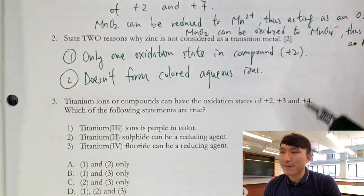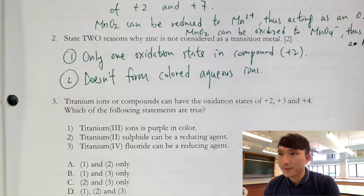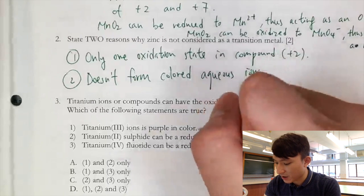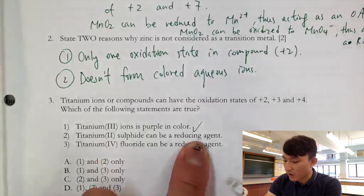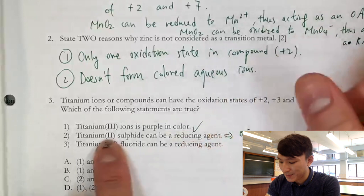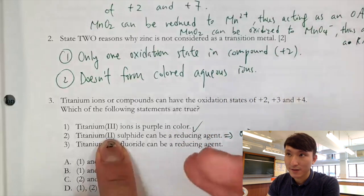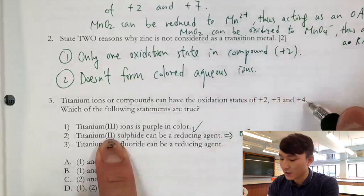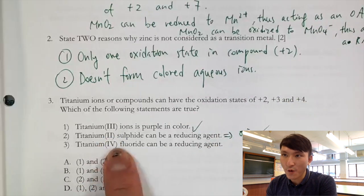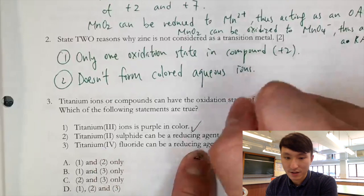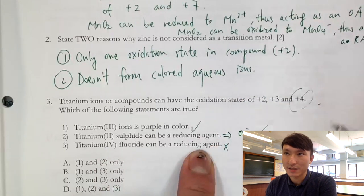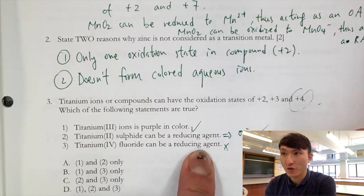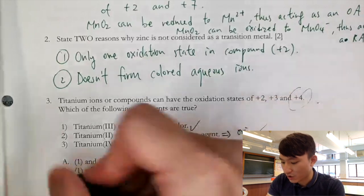MCQ on titanium (possible oxidation states: +2, +3, +4): Statement A — titanium(III) ion is purple, which is correct if you've memorized the color. Statement B — titanium(II) sulfide can act as a reducing agent. Since +2 can be oxidized to +3 or +4, yes it can undergo oxidation, so this is correct. Statement C — titanium(IV) oxide can act as a reducing agent. Since +4 is the highest oxidation state, it cannot be further oxidized, so it can only act as an oxidizing agent. Therefore the answer is A.